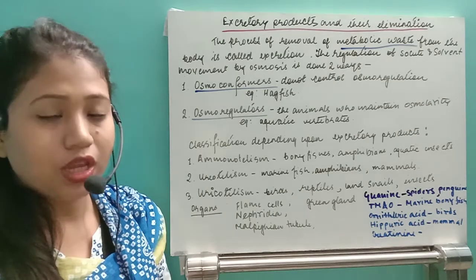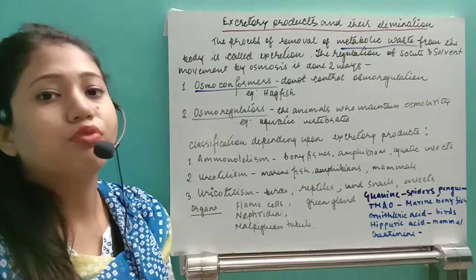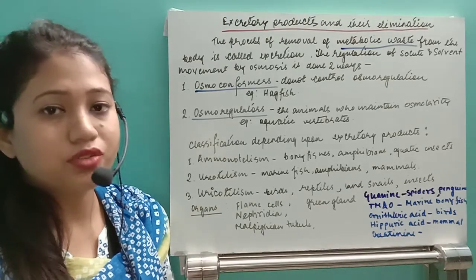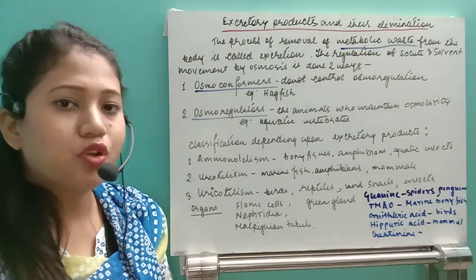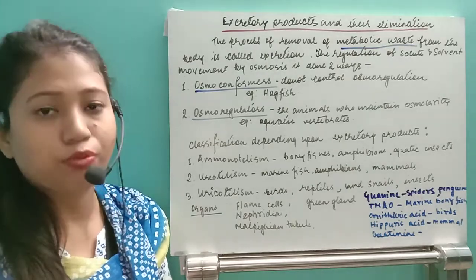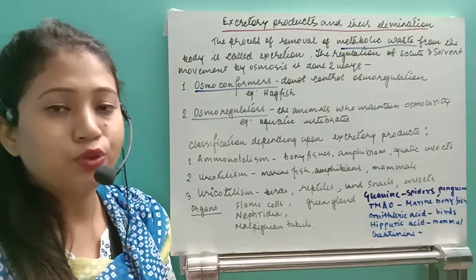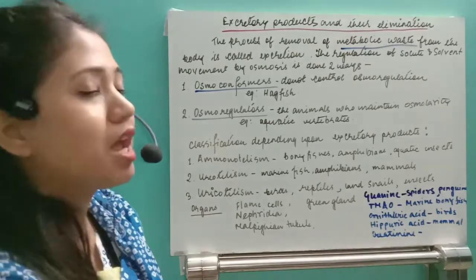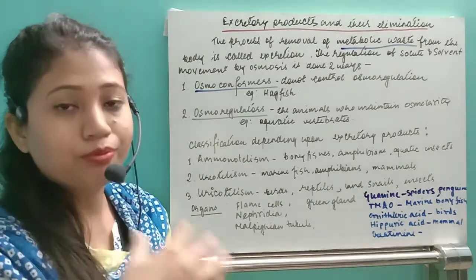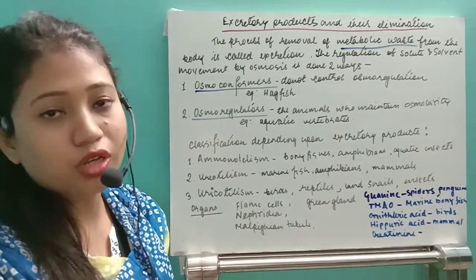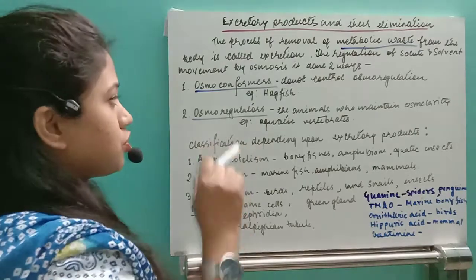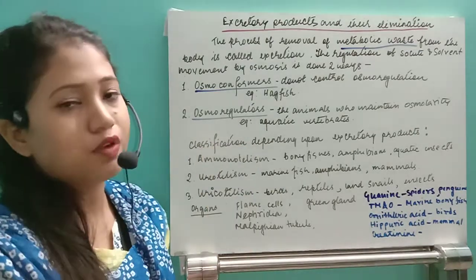In our body, if we somehow have a higher level of salt, those salts will also be removed outside with the same excretory product — urine. There are two types of organisms depending on how they control their osmoregulation: one is osmoconformers and the other is osmoregulators.